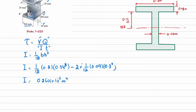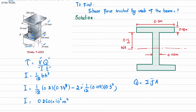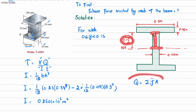Now we will find Q. Q = Σ ȳ·A. For the web, we know that Y ranges from 0 to 0.15 m — this is the web portion between the neutral axis and the flange junction. The neutral axis is at Y = 0, and the web extends to Y = 0.15 m.